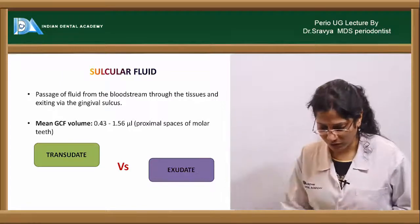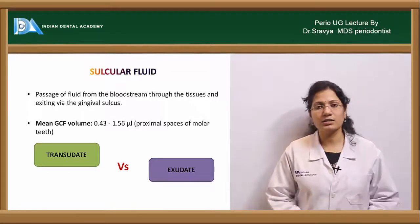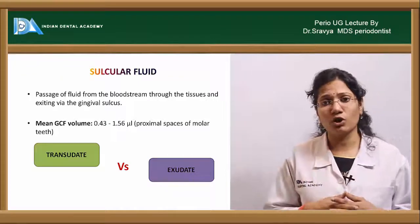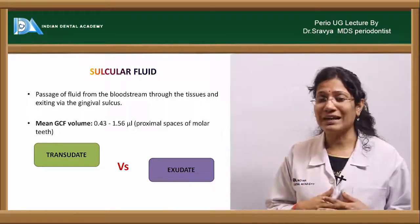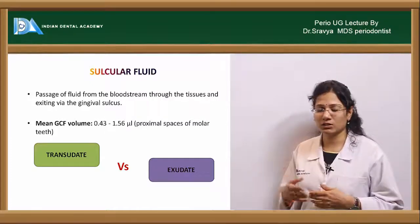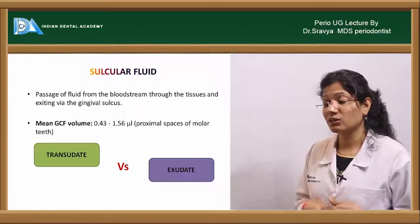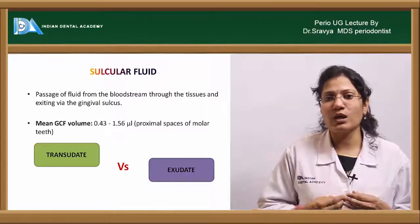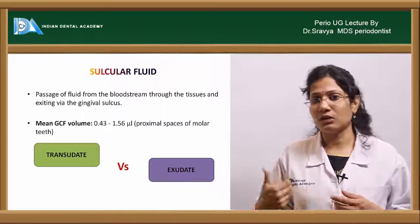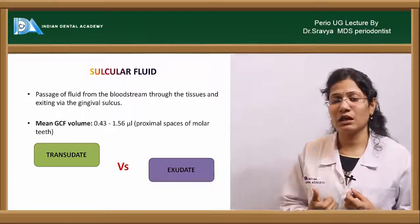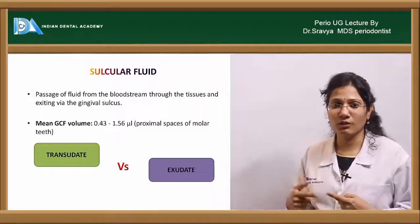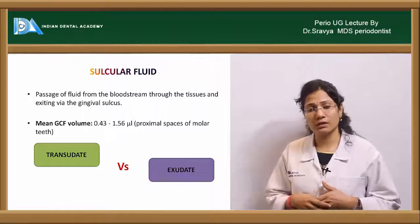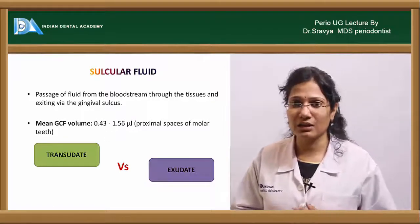The sulcular fluid is also called gingival crevicular fluid (GCF) — it is a fluid present within the gingival sulcus. There is controversy about whether to call it a transudate or an exudate. In a healthy condition, it can be called a transudate, as it is the intercellular fluid released into the sulcus. But in an inflammatory state, as inflammation increases and GCF flow increases, it can be called an exudate.